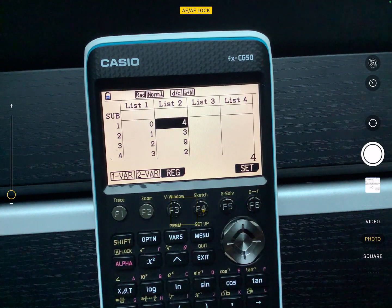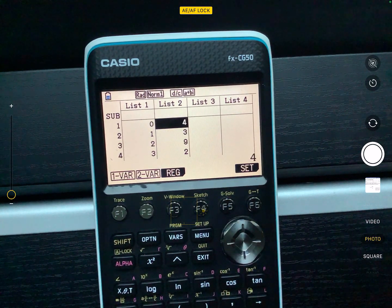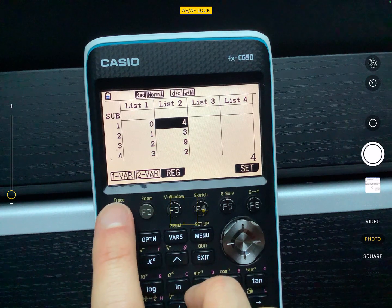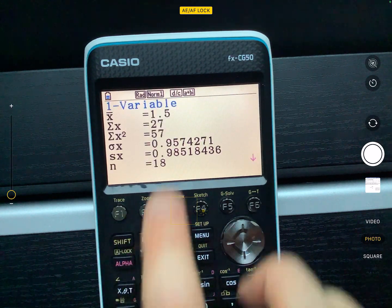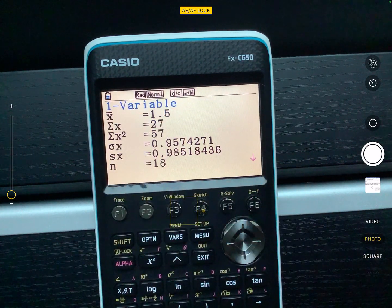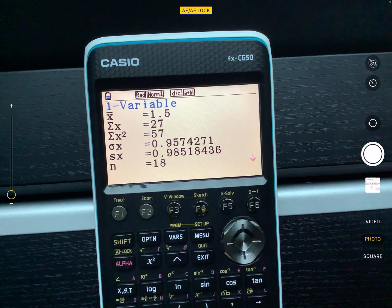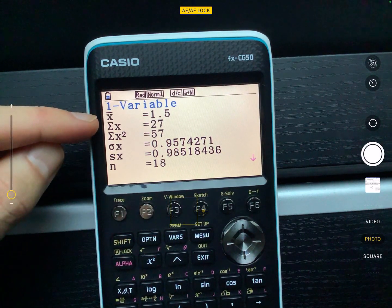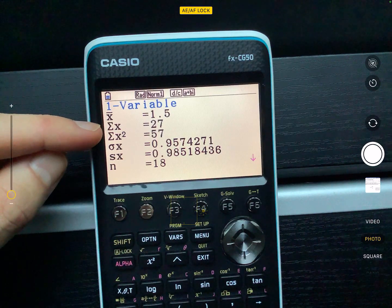Now I've done that, I've effectively got the frequency table that we've just seen written into the calculator. So you're going to press one variable for the calculation, and you'll see all of these different things that we've got here. Now remember the bits that I said you need to write to get the method mark, you can't just say the 1.5, you should say the sum of x,